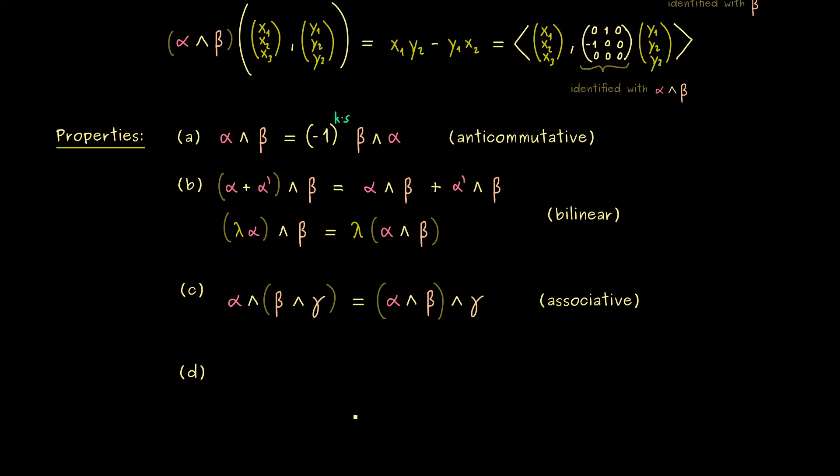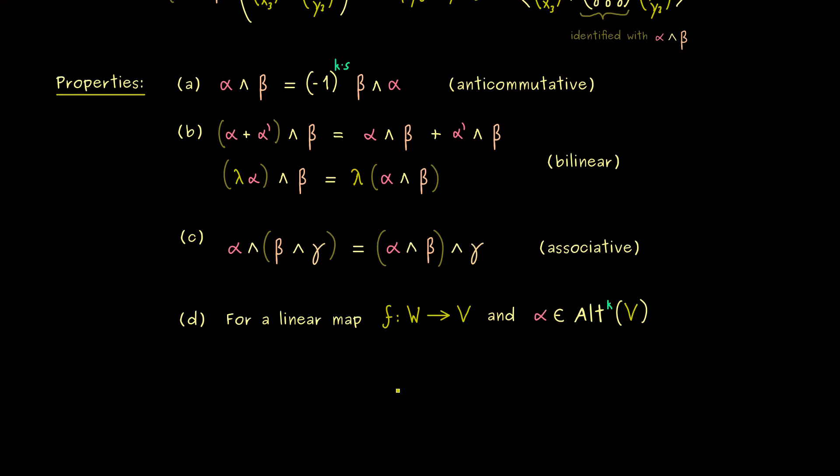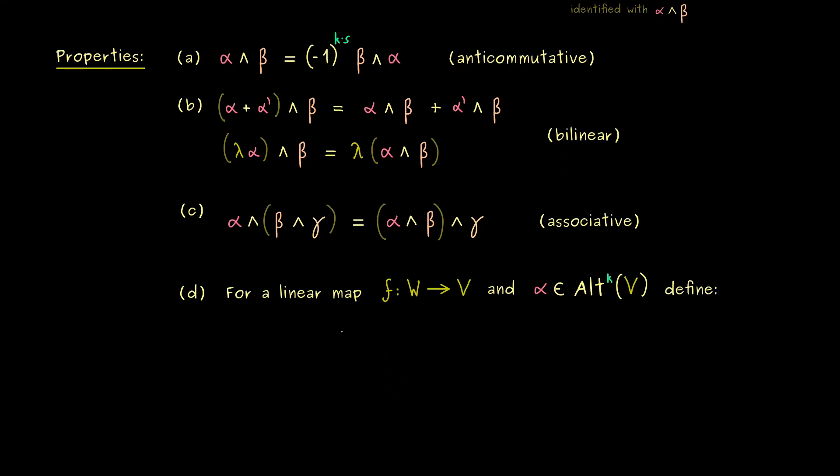For this series here, it's more important that you remember these four rules for the wedge product. So you see we've already reached the last property now, but for that, I first need a definition. Here I need two vector spaces W and V and a linear map between them. And now it turns out that every alternating k-form on V can be put back to W. This means, with the help of f, we can define a new alternating k-form on W. And the usual name one chooses for that is f*. More concretely, f* alpha is the new alternating form.